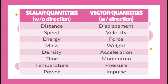Here are some examples of scalar and vector quantities. The scalar quantities, which are without direction, are: distance, speed, energy, mass, density, time, temperature, and power. While vector quantities, which have direction, are: displacement, velocity, force, weight, acceleration, momentum, pressure, and impulse.